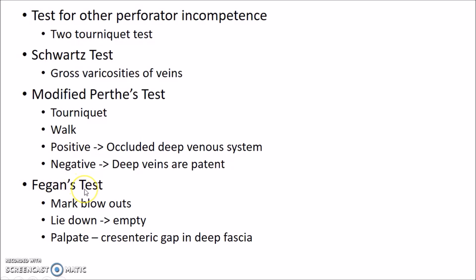The next test is Fegan's test. In this, the course of the great saphenous vein is marked, especially the blowouts. The patient is asked to lie down and the veins are emptied. You then palpate in the area of blowouts — the area of communicating veins — and you can find crescentic gaps in the deep fascia.